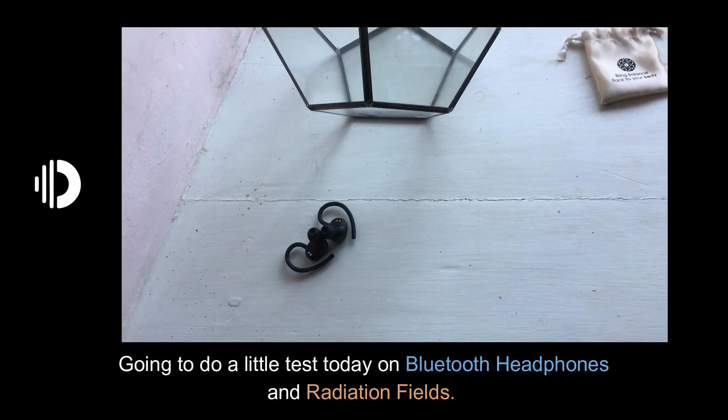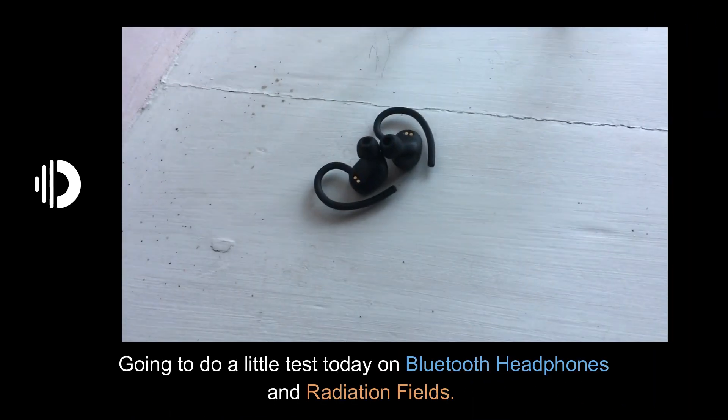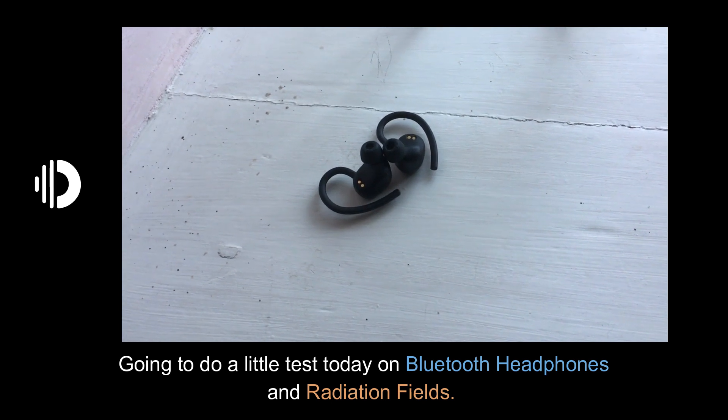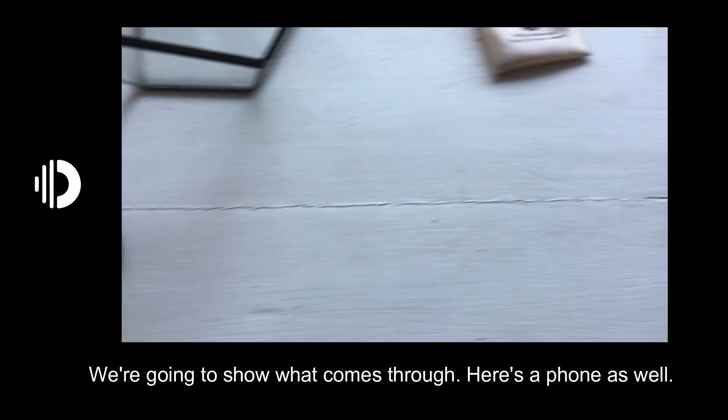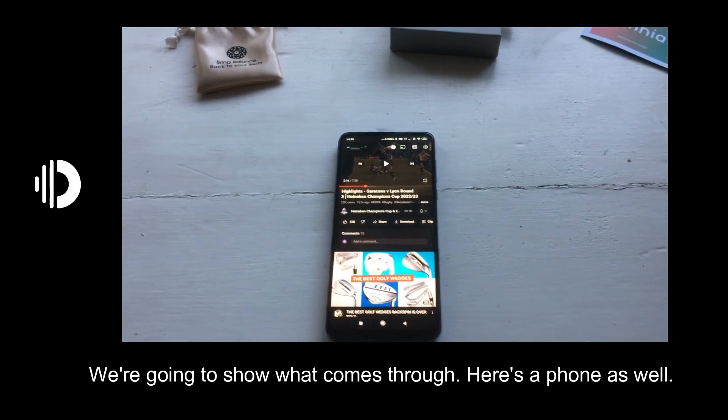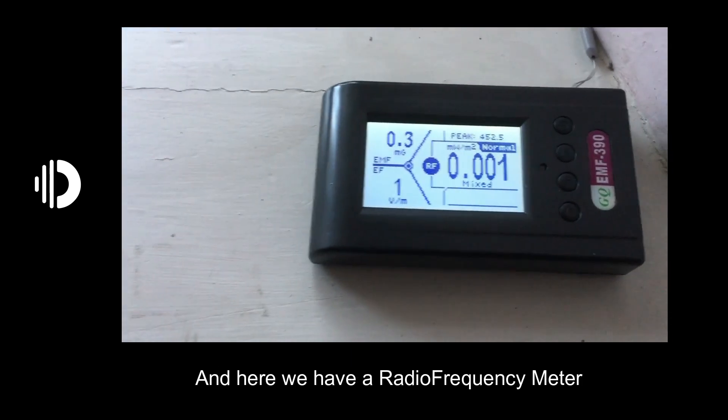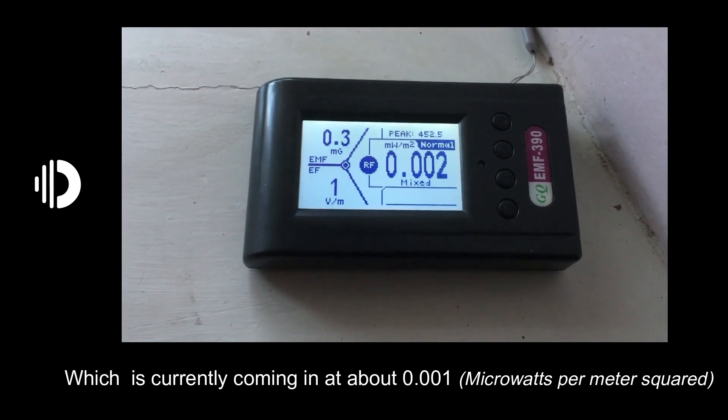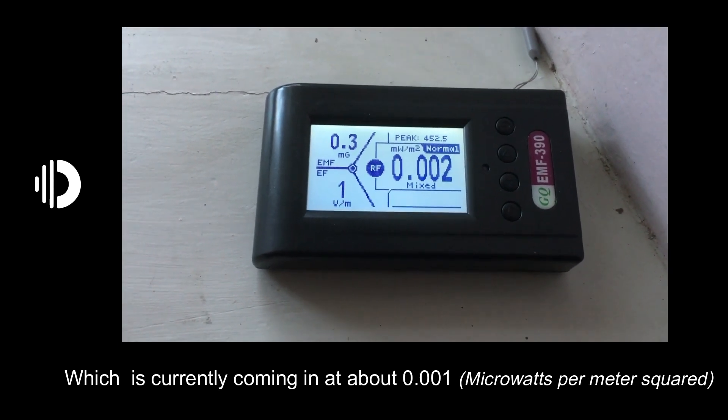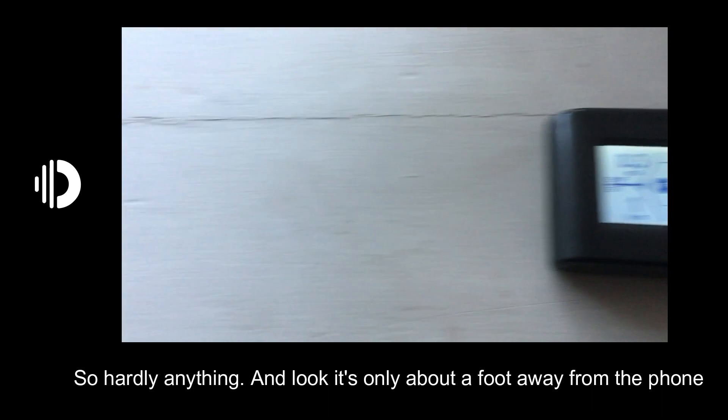We're going to do a little test today on Bluetooth headphones and radiation fields. Here's a phone as well, and here we have a radio frequency meter which is currently coming in at about 0.001, 0.002, so hardly anything. It's only about a foot away from the phone.